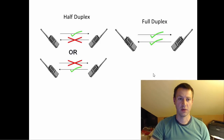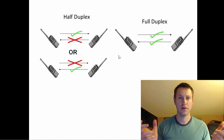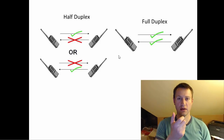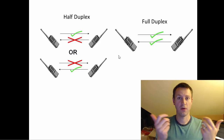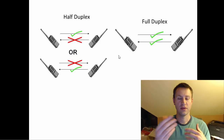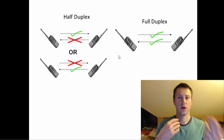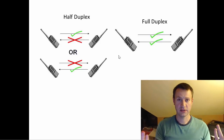Half duplex is like the two-way radio example where both people have a radio, and if you want to talk you need to hold down the button. The other person needs to let go of their button in order to hear you. If both people push the button at the same time, nobody can hear each other. There's some handshaking that needs to occur — you say 'over' so the other person knows you're done. Half duplex: one person talking, one person listening.